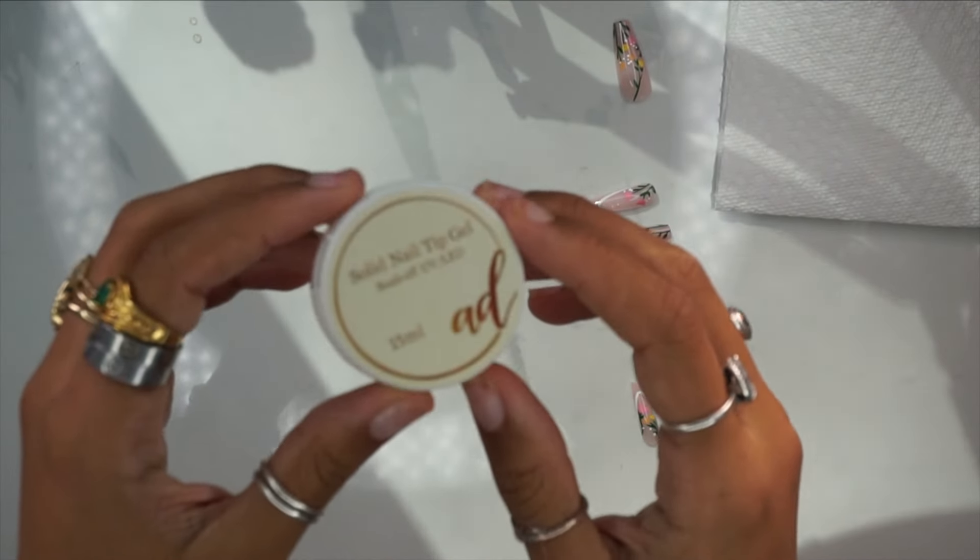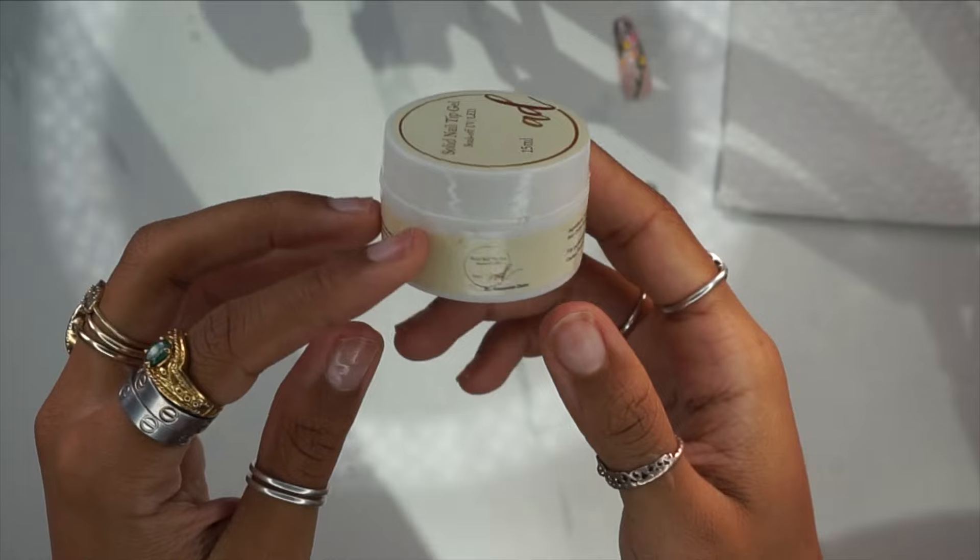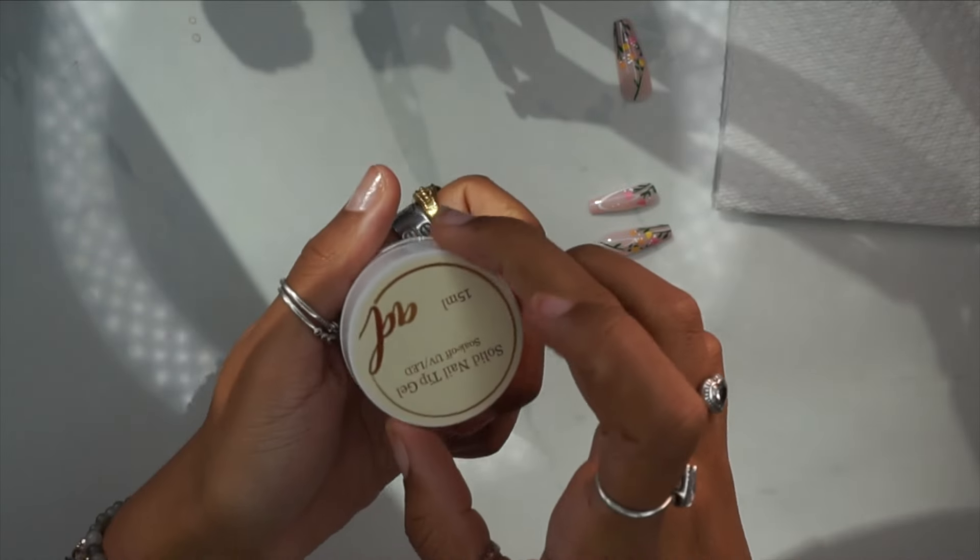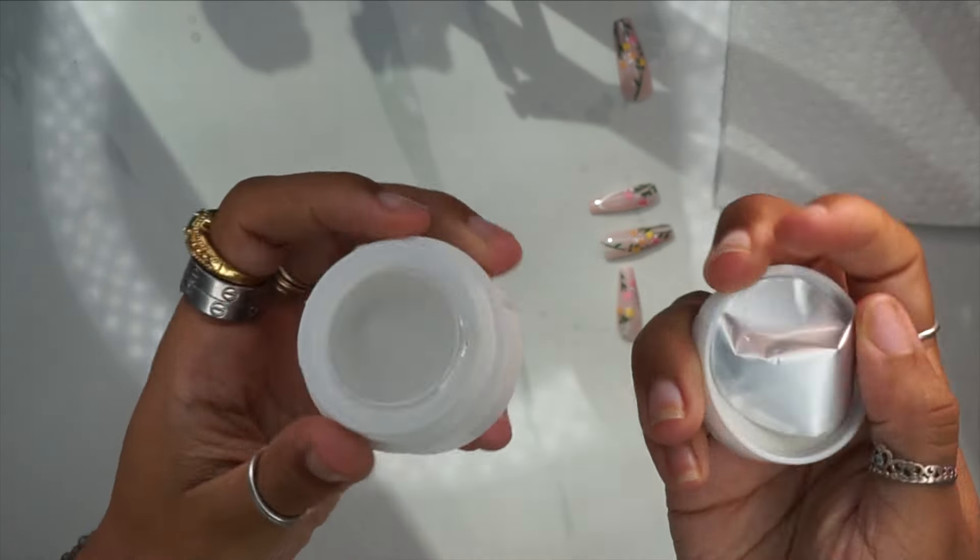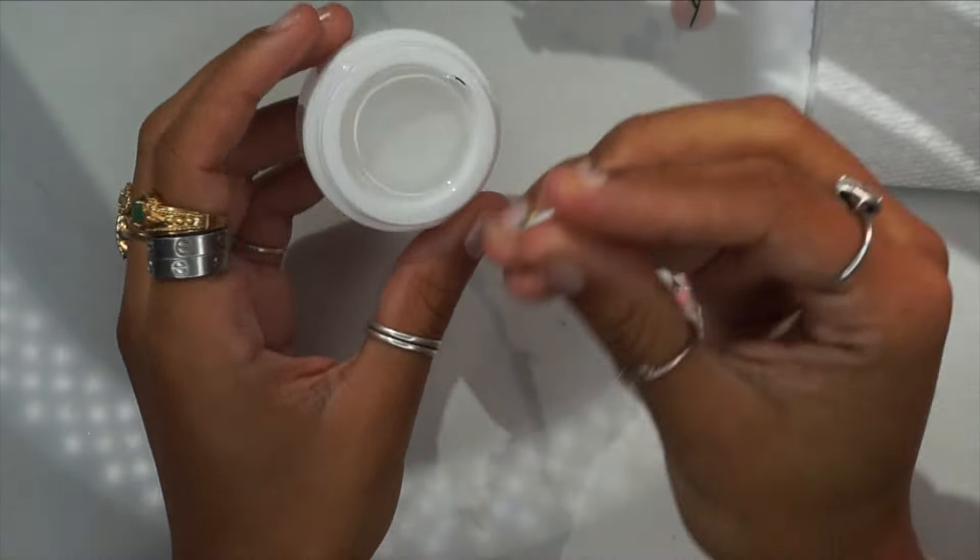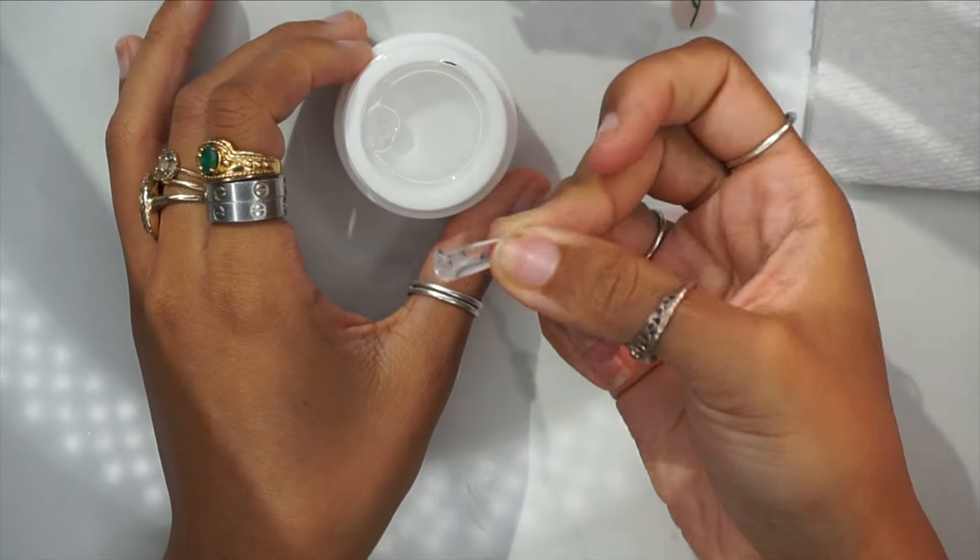Next is the actual application. We will never in a million years be using nail glue—toss it out. Well, actually don't toss it out because you can use nail glue for various things, but for pressing on fake press-on nails, absolutely not. The main thing that people do is use nail glue because that's the main method people know, but we're going in with a solid nail tip glue gel.